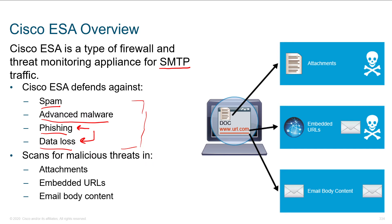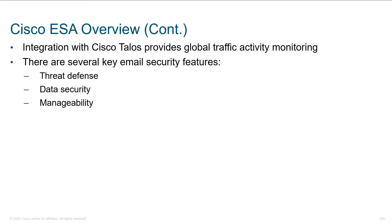When we scan for malicious threats, we can look at attachments, embedded URLs, and the email body content itself. The goal of the Cisco ESA is to secure your email, and one of the nice things that assists it in doing so is that it's getting constant updates from Cisco's Talos team — a global threat management security team that's writing and adjusting and fine-tuning those rules on a regular basis. You're getting constant updates about the various threats that are out there.